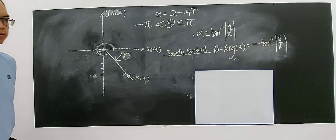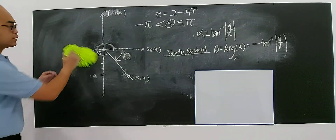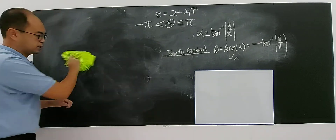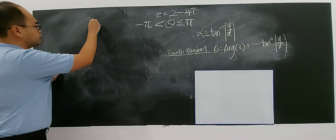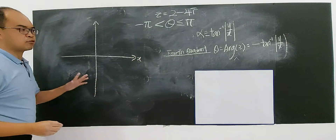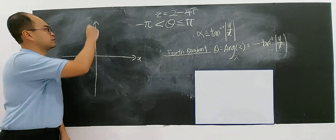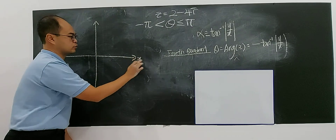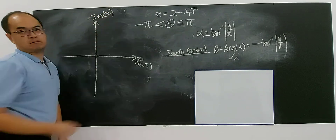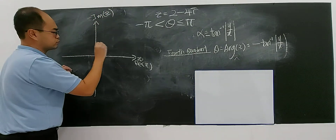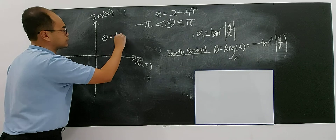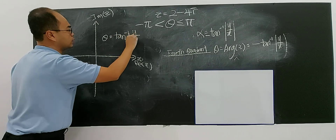Now I'll summarize for you. Look at this: arctangent of this. If you love to memorize formulas, you go on. But if you are a student that likes to explore what is happening, then it's better for you to see this video again. So the real part of z, imaginary part of z — for the first quadrant, the argument will be arctangent of y over x.